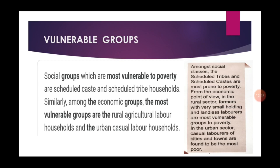If we classify into social groups and economic groups, the more vulnerable people in social groups are the scheduled castes and scheduled tribes. In economic groups, the most vulnerable are those in rural agricultural labor households, and in urban areas, casual laborers.